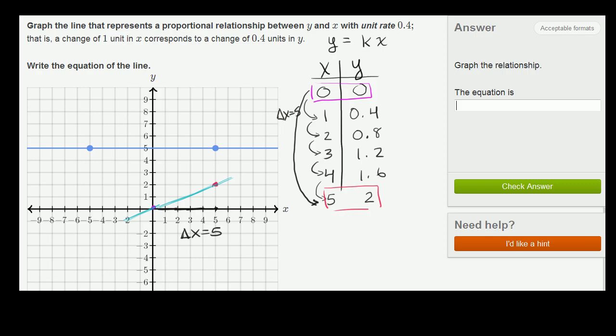What was our corresponding change in y? Well our corresponding change in y, when our change in x was 5, our change in y was equal to 2. And you see that here. When x went from 0 to 5, y went from 0 to 2. So our change in y in this circumstance is equal to 2.